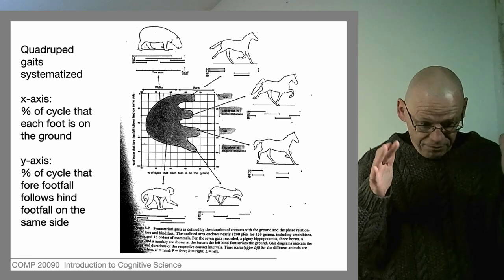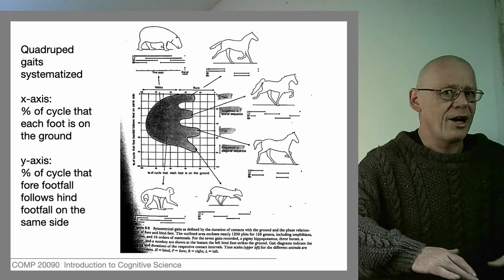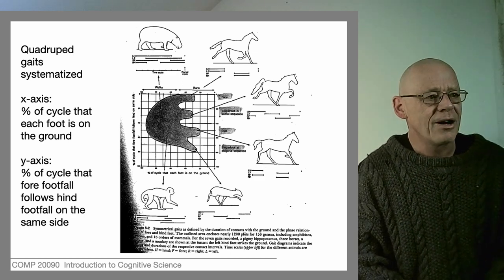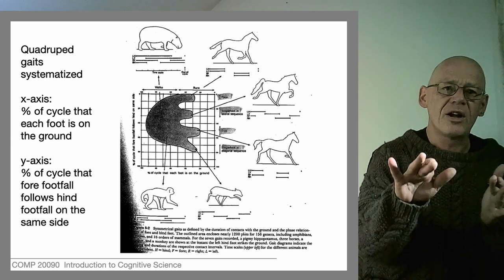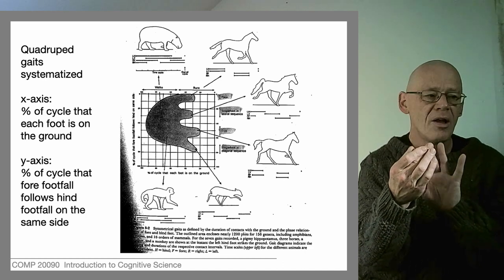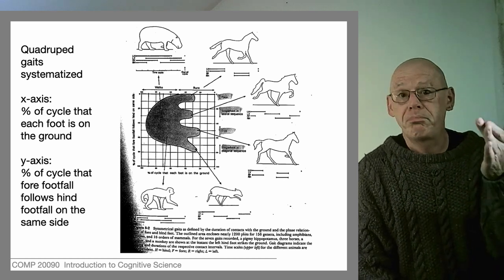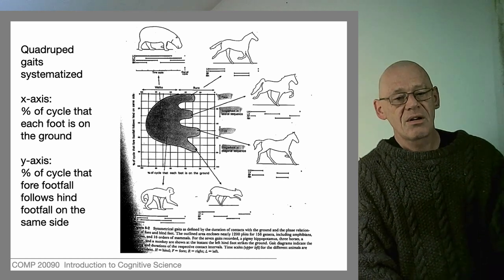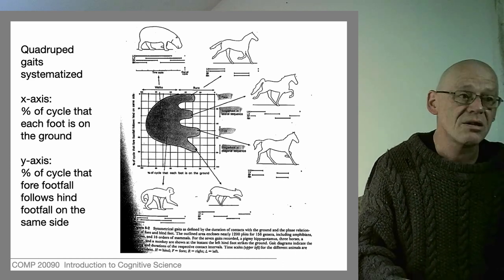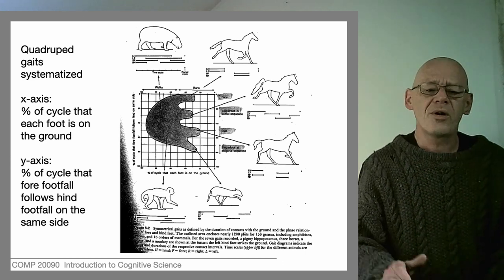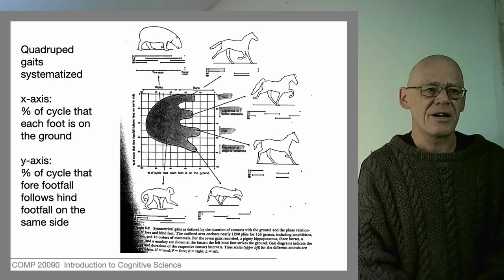Light little animals like the impala — their foot hits the ground and then they're in the air, hardly underground at all — whereas a hippo has feet on the ground the whole time. On the y-axis we have the percentage of the cycle that the forefoot fall follows the hind foot fall on the same side, so just a phase relationship between two legs on the same side of the body. You can see there's an area of possible gaits, and each observation falls within that shaded area. The same animal will occupy multiple points if it has multiple gaits, like the horse, but now we're in a position to make sensible, well-informed comparisons between different animal gaits.